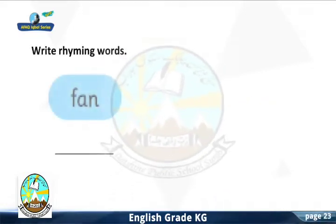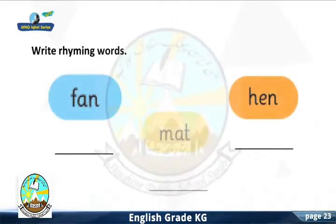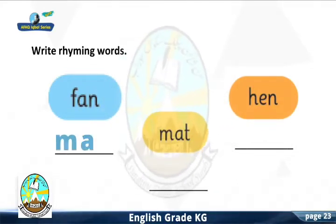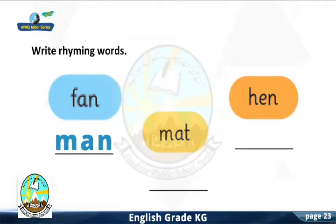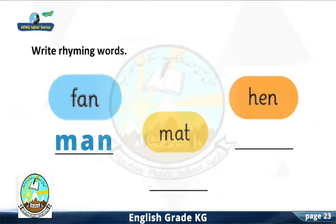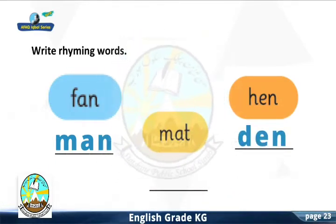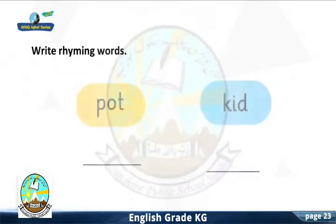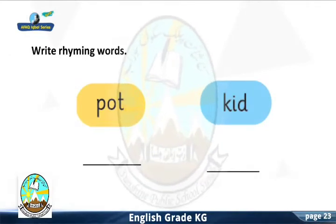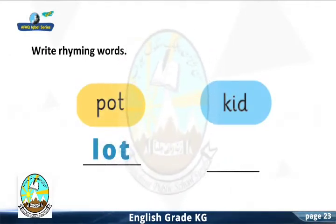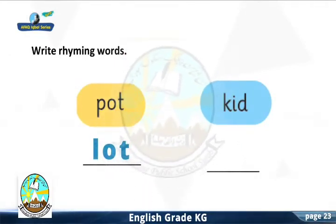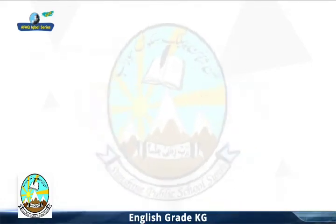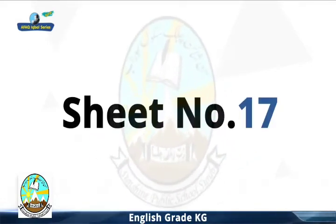Sheet Number 16: Write rhyming words. Fan — Man. Hen — Den. Mat — Rat. Pot — Lot. Kid — Lid. Very good.